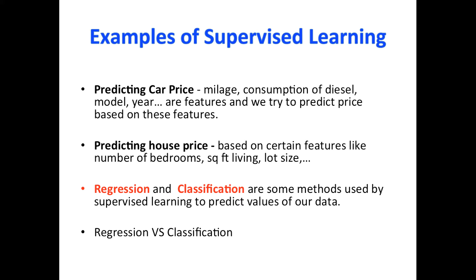Generally, a car that has a higher mileage tends to be cheaper compared to a car with low mileage, and car price depends on the model of the car and year of the car. Usually cars made in recent years tend to be more expensive than cars made in previous years. So those are all the features that will help us predict the price of a car. So price in this case is called what is known as a target — we try to predict the target based on these features.